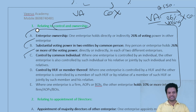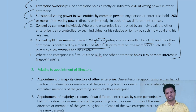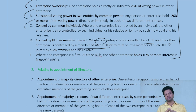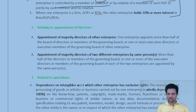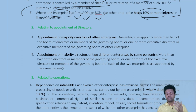Point D: Control by HUF or member. Where one enterprise is controlled by a HUF and the other enterprise is controlled by a member of that HUF — meaning both enterprises belong to members of the same HUF — then both enterprises are said to be associated enterprises. Point E: if one enterprise has 10% or more interest in the capital of a firm, AOP, or BOI, then that firm, AOP, or BOI is said to be associated with that enterprise.